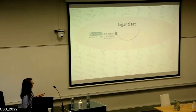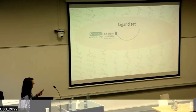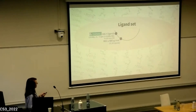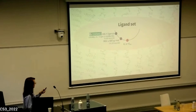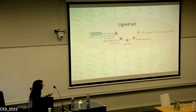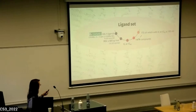In our work, we retrieved a ligand set from the ChEMBL database. We kept only small molecules for which we had either a Ki or IC50 towards the ABL1 protein. With this constraint we retrieved about 1,500 molecules, and nearly half of them were active towards the ABL protein.